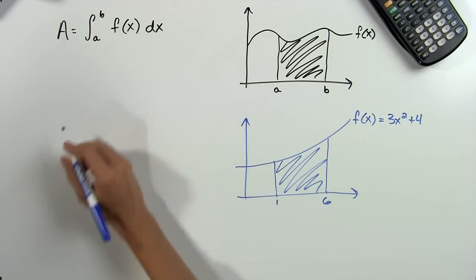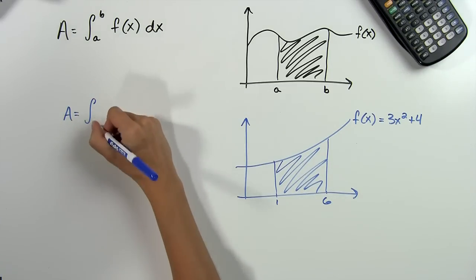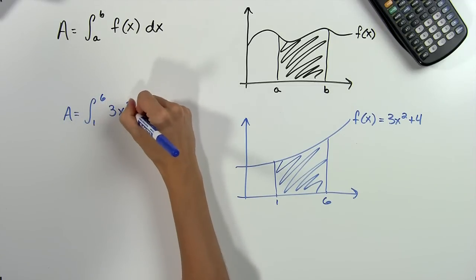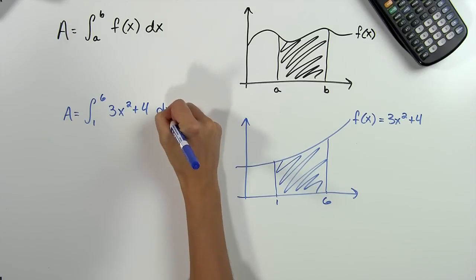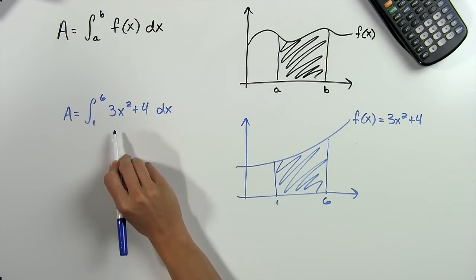According to our formula, the area of this shaded region will be equal to the integral from 1 to 6 of our function 3x squared plus 4. Now we can go ahead and compute this integral term by term.